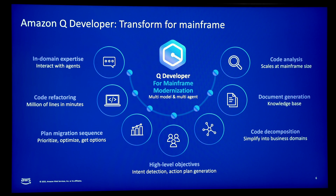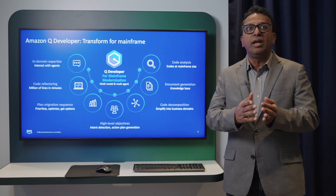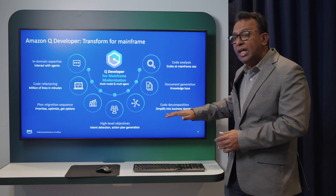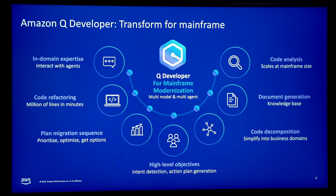Q Developer will also do decomposition — how the different modules of the code are structured. In billing, for example, you have rating, billing, how you are sending feeds to back-end applications, and how real-time charging works — all that analysis can be done in code decomposition. Depending on your priorities and intent, it can also help you in migration wave planning.